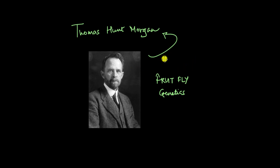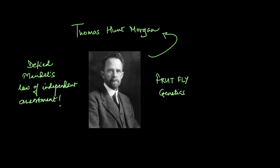This is Thomas Hunt Morgan, a scientist from the 1900s who was obsessed with fruit fly genetics. He would perform multiple crosses in order to understand what kind of traits and genes are there in these fruit flies. One fine day, he performed a cross that did not follow Mendel's law of independent assortment. Mendel's work had given amazing results, but that wasn't the case with Morgan's fruit flies. So let's dig deeper and take a closer look at what exactly went down in this cross.